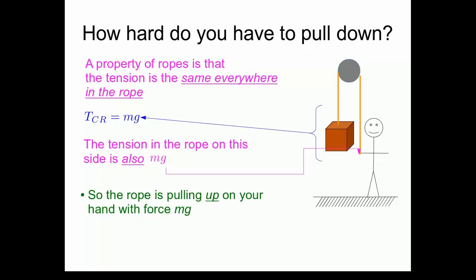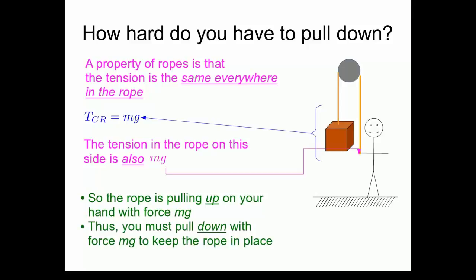As a consequence, the rope is pulling up on my hand with a tension force equal to the weight of the crate, mg. Which means that if I want everything to stay stationary, I have to pull down with a force equal to the weight of the crate, mg, to keep everything in place.